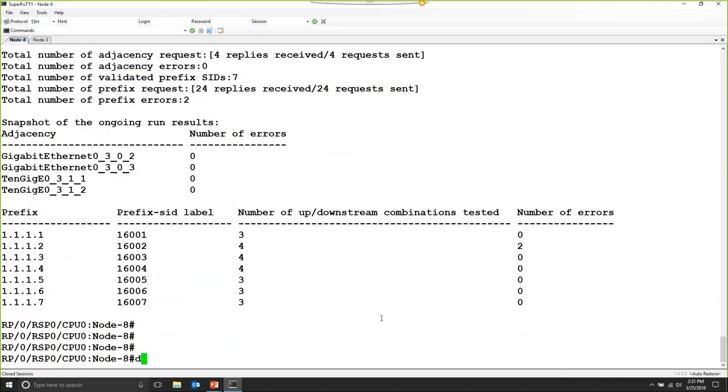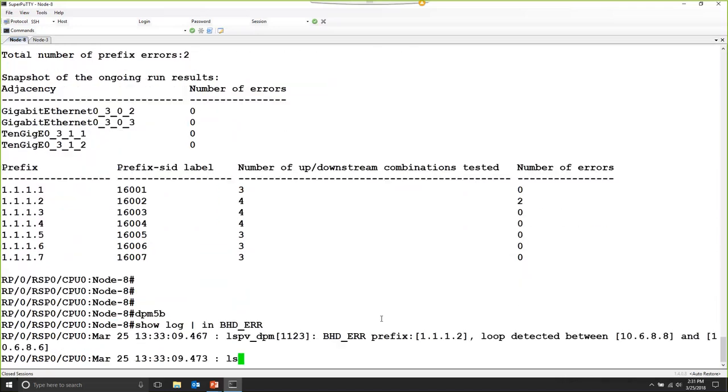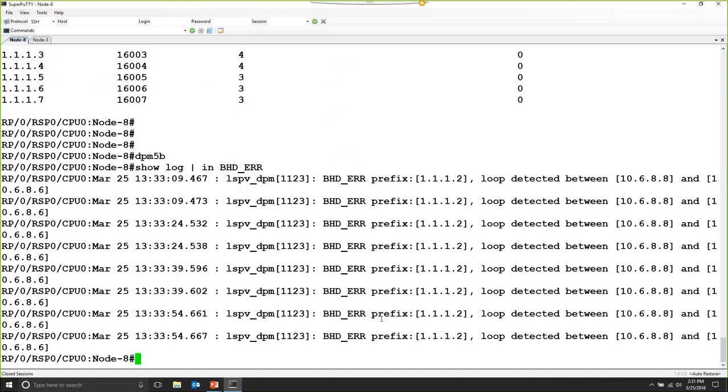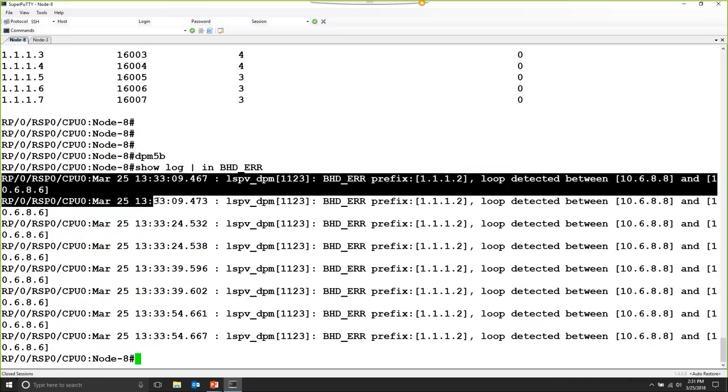Well, if we have a look at the log. We can see the DPM alarms. In this case, the alarms indicate that a loop has been detected between node number 8 and node number 6 for the LSP towards router number 2.